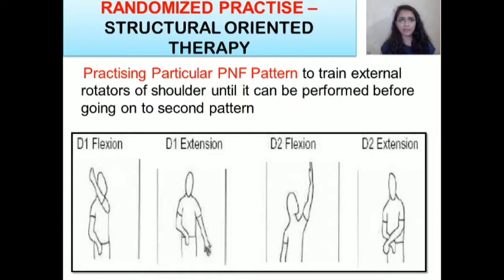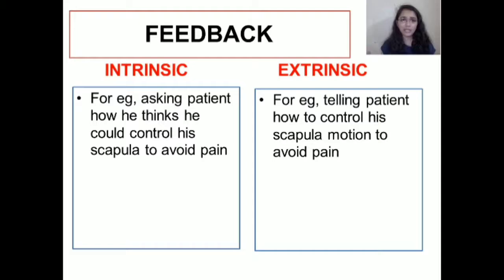The next principle is feedback. Feedback is of two types: intrinsic and extrinsic. Intrinsic feedback is where the patient himself feels the movement while performing it, and extrinsic is where someone external guides or tells the patient how to feel the movement. The biggest difference between these two is that intrinsic feedback gives more scope for auto-correction to the patient.